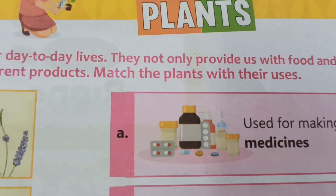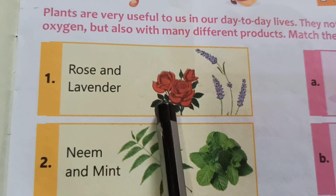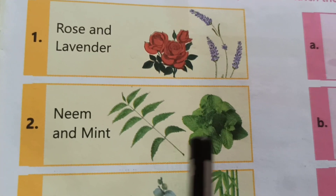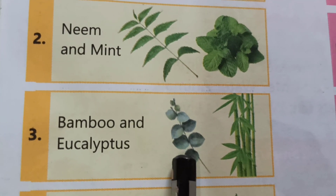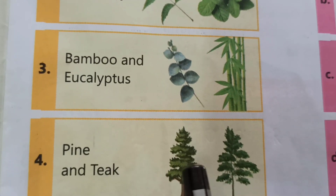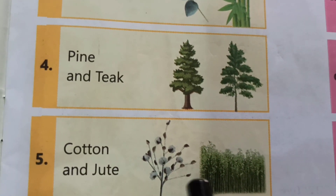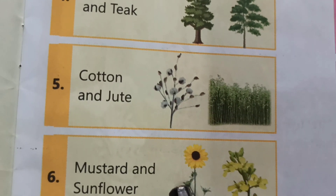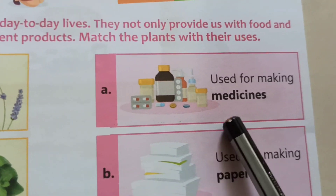Match the plants with the uses. You can see here: first one, rose and lavender; neem and mint; bamboo and eucalyptus; pine and teak; cotton and jute; mustard and sunflower — and their uses on the other side.